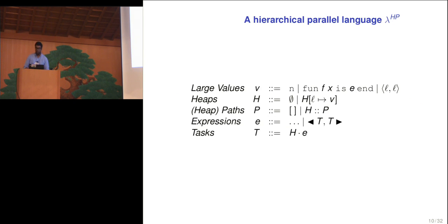So let's look at what lambda HP looks like. It starts off as a fairly familiar lambda calculus. We have large values, which are the only kind of values that can be in heaps. Heaps themselves are simply maps from locations, which are analogous to pointers and implementation, to the values. And we have heaped paths, which are essentially lists of heaps. I'm going to get back to this in a moment. Finally, the expressions consist of standard terms, along with a parallel term that consists of two tasks. And tasks themselves consist of an expression and an associated heap. So in doing so, we have a tree of tasks, each of which has their own associated heap, just like I described before.